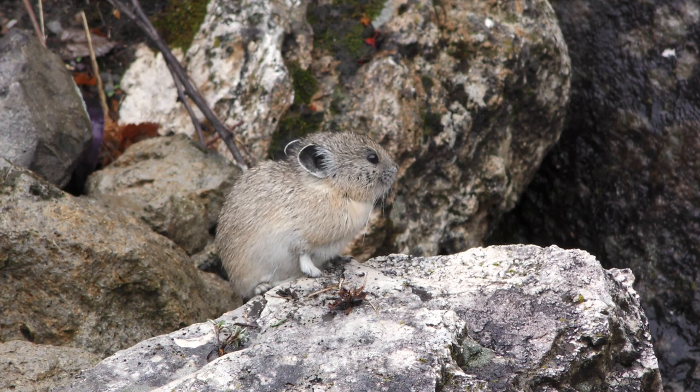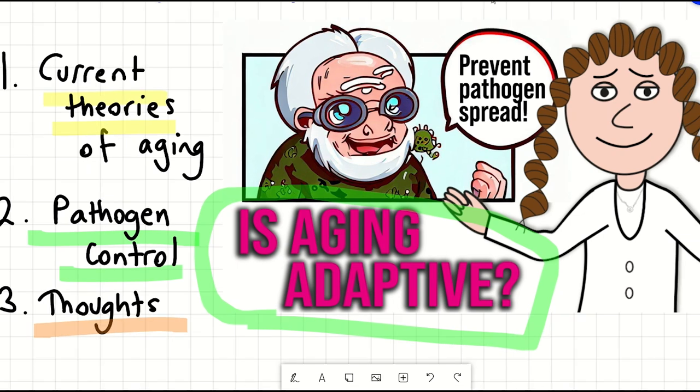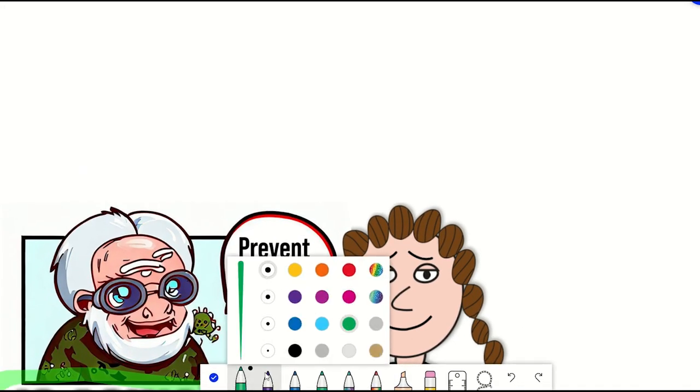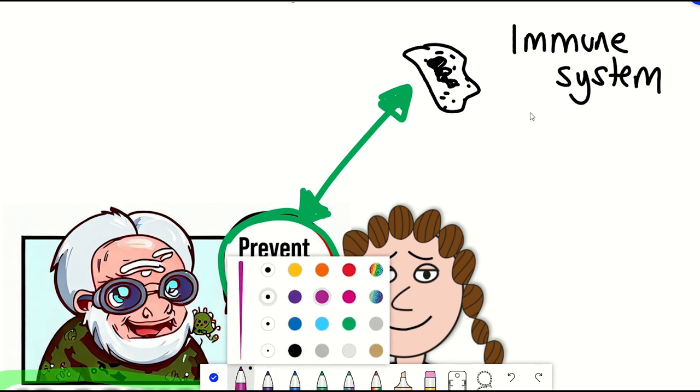So why ultimately should we care about this? Well, why a process happens can give clues on how to intervene. In this case, it suggests that the immune system is looking like a compelling choice, along with understanding how cells respond to infection. Oh hey, senescence and p53.